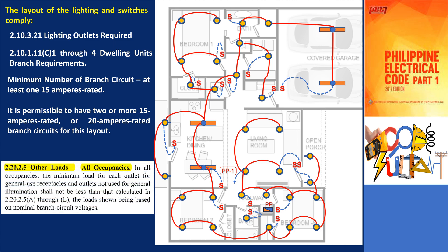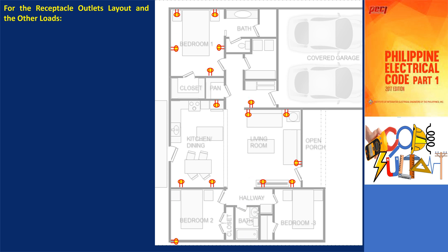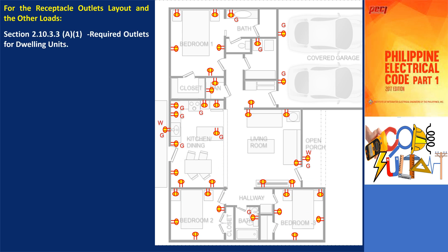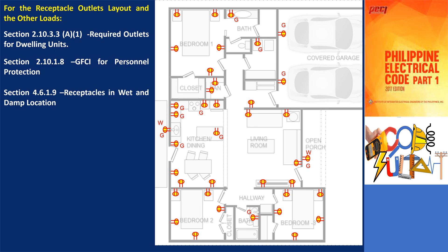How about for the other loads? Section 2.20.2.5 — other loads, all occupancies. In all occupancies, the minimum load for each outlet for general use receptacles and outlets not used for general illumination shall not be less than that calculated in 2.20.2.5a through l. The placement of outlets and the branch circuit requirements are based on sections 2.10.3.3a1, 2.10.1.8, 4.6.1.9, and 2.10.1.11c1 through 4.